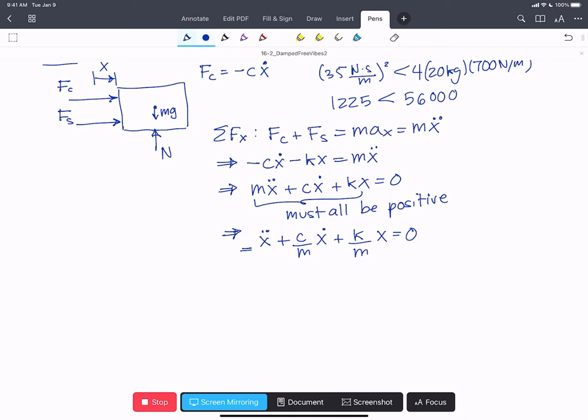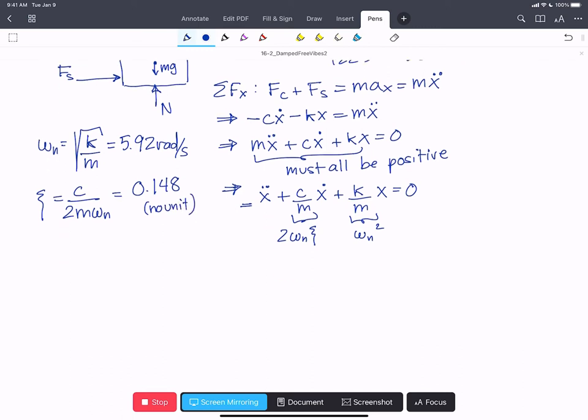When there's no coefficient in front of the x double dot, whatever's in front of the x dot is 2 omega n zeta, and whatever is in front of the x is omega n squared. And so we can write that omega n equals the square root of k over m, and that's going to equal 5.92 rads per second. We can find that zeta equals c over 2m omega n. We're going to get a value of 0.148 for that one. There are no units to zeta because zeta is a ratio.